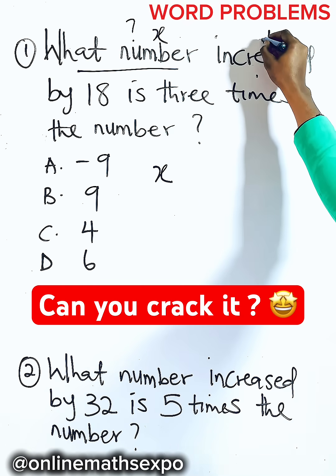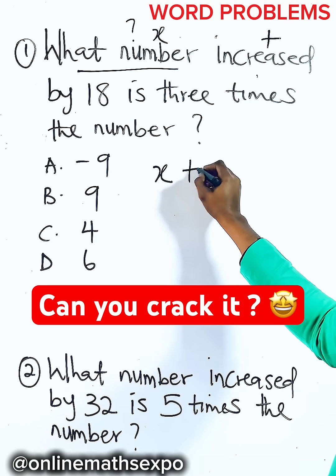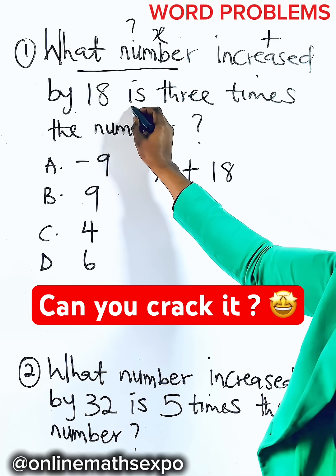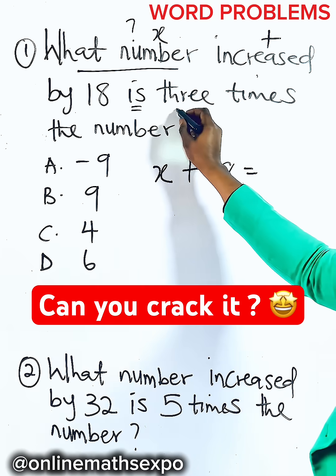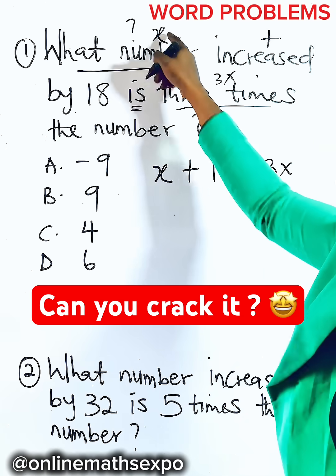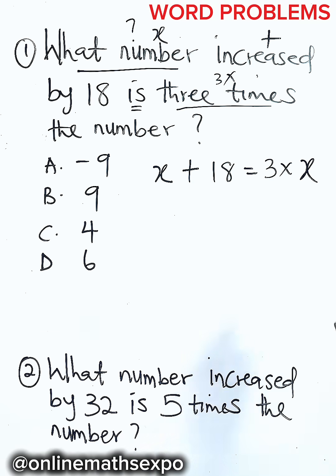Increased means to add, so you bring down your addition. Increased by this 18 is equals. 3 times is 3 times, okay? The number. The number is x. You are done.